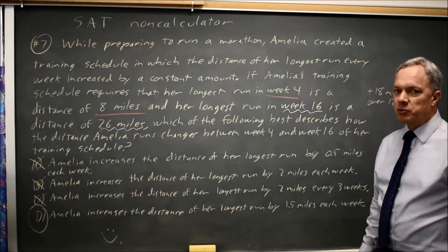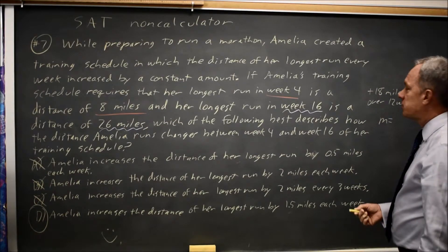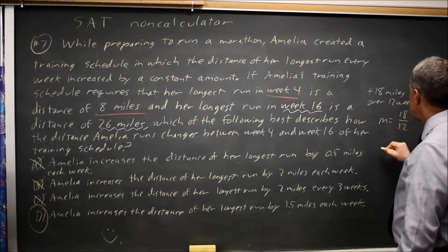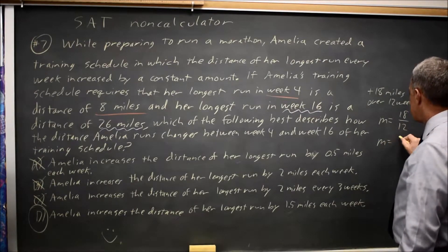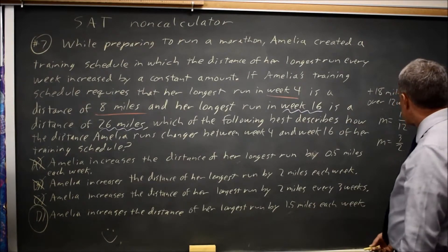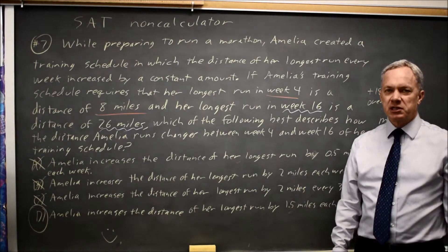Alternatively, we can approach this by finding the slope. The slope is the change in miles over the change of weeks, and we found the change in miles was eighteen. The change in weeks was twelve, so the slope is eighteen over twelve, which is three over two, and that is one point five, where the slope is in miles per week, so one point five miles per week does match that.